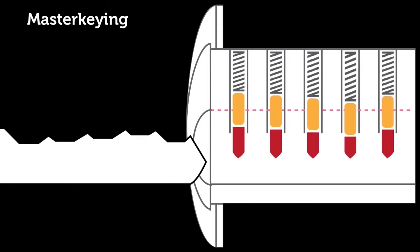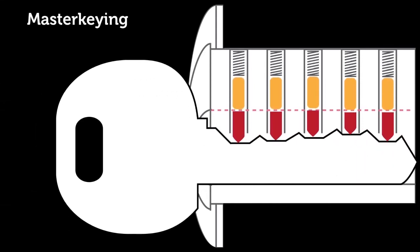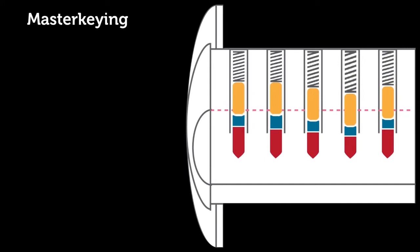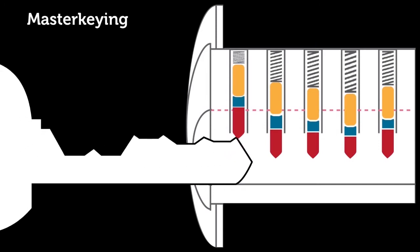In a regular lock, the change key is inserted and lifts the bottom pins to the shear line, allowing the lock to open. When master pins are added to the lock, both the change key and the master key will lift various pins to the shear line, allowing both keys to open the lock.